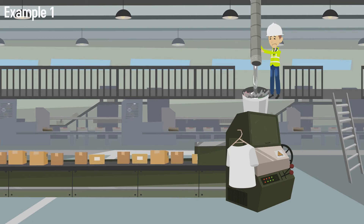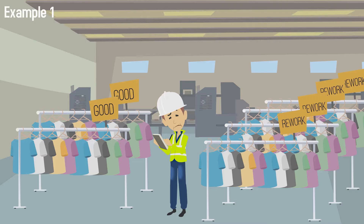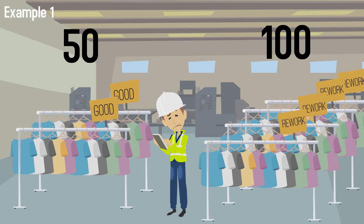As a result of the informational error, most of the shirts must be bleached and re-dyed. By the end of production time, the operator only successfully produced 50 good units and 100 units that needed to be reworked due to being the wrong color.